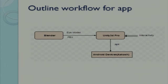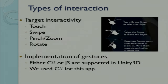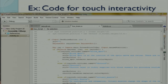This is the outline workflow for implementation of our app. We created models in Blender and exported them in FBX format. Then in Unity 3D, we imported those FBX models and added interactivity. There are many interactivities possible in Android, but for explaining the structure of the eye we focused on four: touch, swipe, pinch zoom, and rotate. To implement this interactivity, Unity provides two ways — we can use either C# or JavaScript. We used C# for this app. Here is an example of code for touch interactivity, and this is for pinch zoom interactivity.